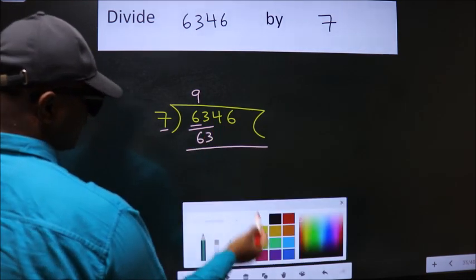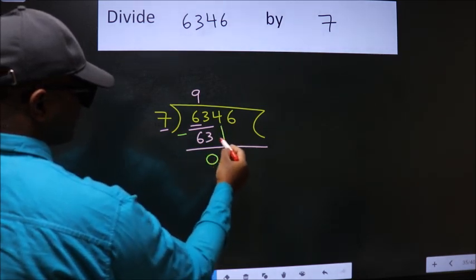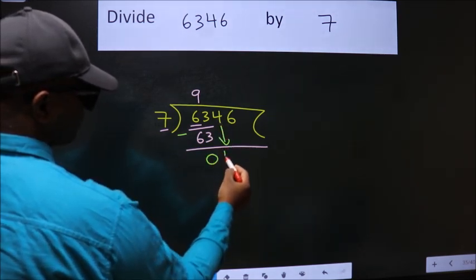Now we should subtract. We get 0. After this bring down the beside number. So 4 down.